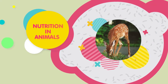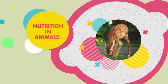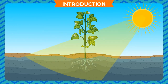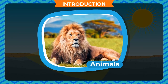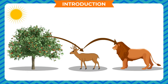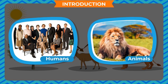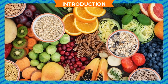Nutrition in Animals. Introduction: Plants can prepare their own food by the process of photosynthesis, but animals cannot. Animals get their food from plants either directly by eating plants or indirectly by eating animals that eat plants. All animals including humans need certain nutrients to grow, repair and functioning of the body. These nutrients are obtained from food.